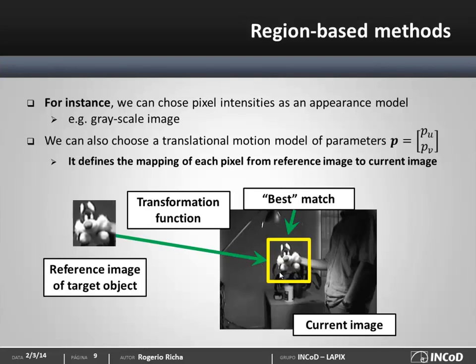So these four elements — grayscale intensity as the appearance model, the translation model, the sum of square differences, and the exhaustive searching — characterize my tracking method.